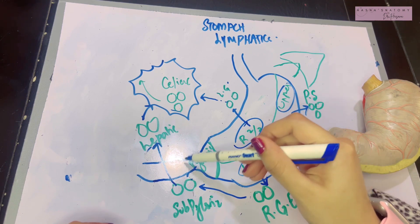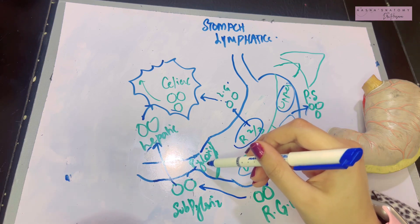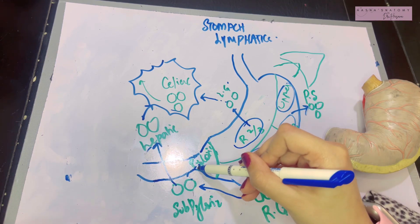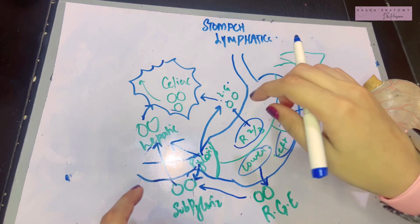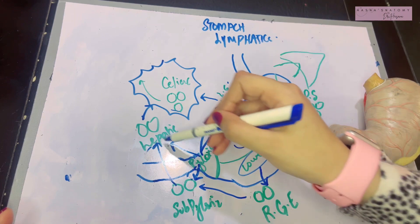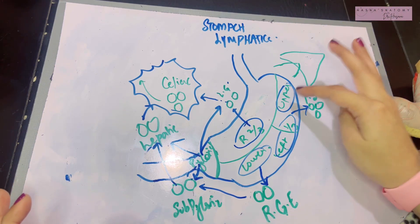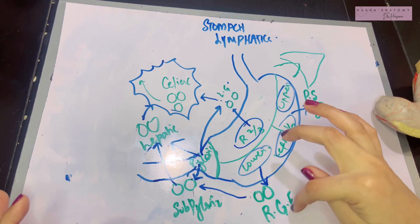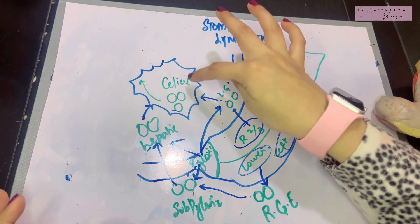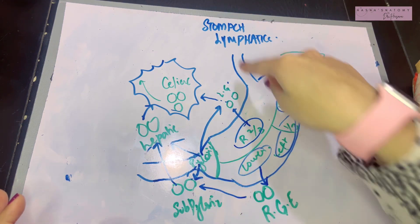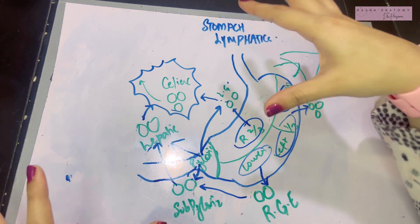The pyloric part of the stomach has its lymph draining in all directions — that is the landmark and special feature about this part. It goes to the subpyloric lymph nodes, the hepatic nodes, and the left gastric lymph nodes, and from these pathways the lymph eventually ends up in the celiac lymph nodes. So: left upper one-third drains to pancreatic splenic; lower left one-third goes to right gastroepiploic, then subpyloric, then hepatic, then celiac; right two-thirds drains into left gastric then celiac; and the pyloric part drains in all directions, eventually ending in the celiac nodes and then the thoracic duct.